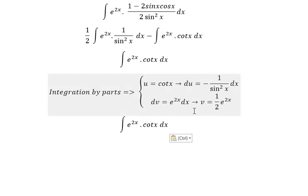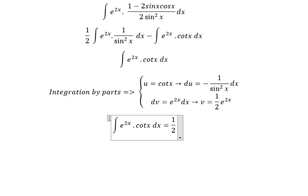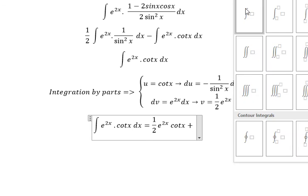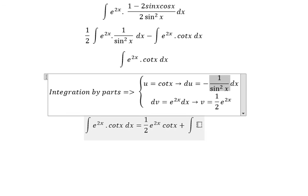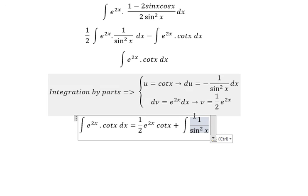Next, we have u multiplied with v. So we have 1 over 2 multiplied with e to the power of 2x cotangent x. Next, we have a negative so we move the positive in here. And we got the integral of this one, multiply with this one.